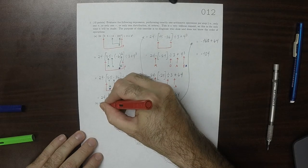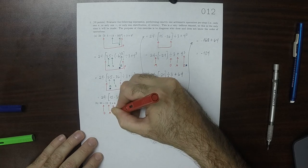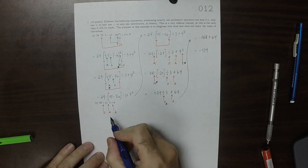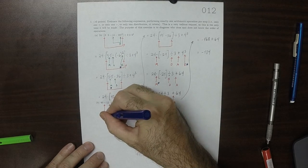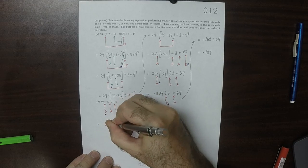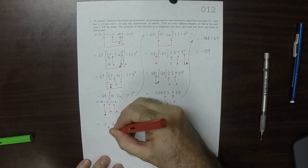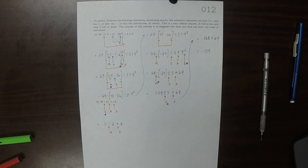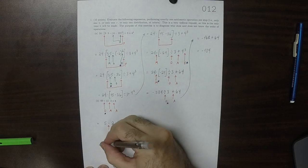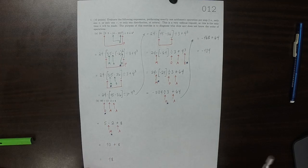For part B, again, we have a divide, a multiply, and an add. Divide and multiply are tied, so the tiebreaker is whichever is furthest to the left — so we're going to do that divide first. 60 divided by 12 is 5, then multiply by 2, add 8. The multiply has higher precedence, so that's the one we do: 5 times 2 is 10, add 8. There's only one operation left, so the answer is 18.